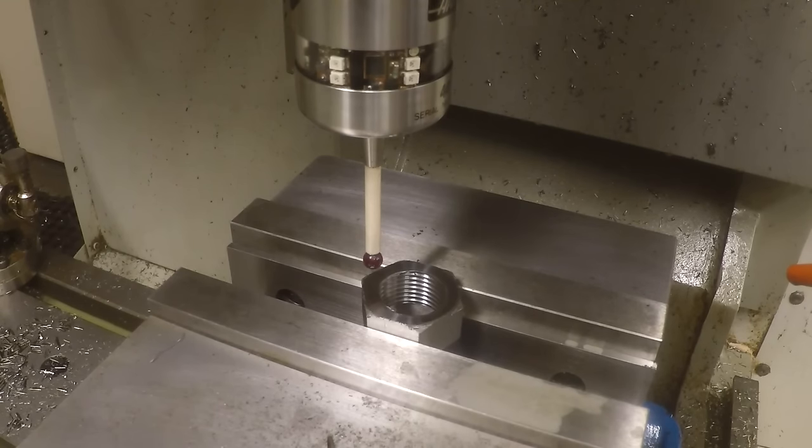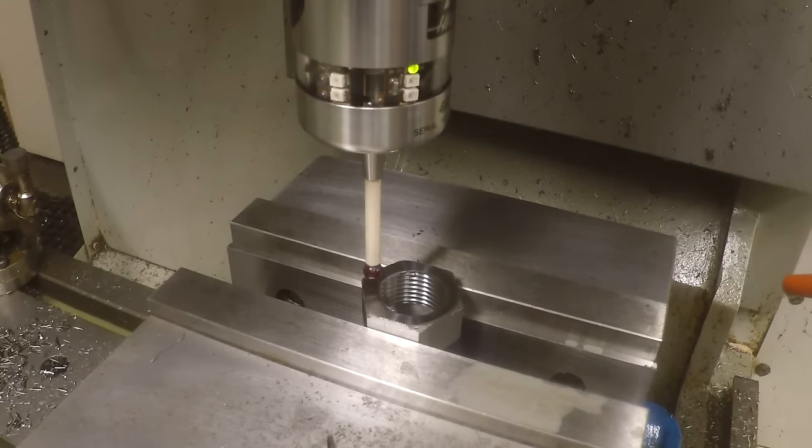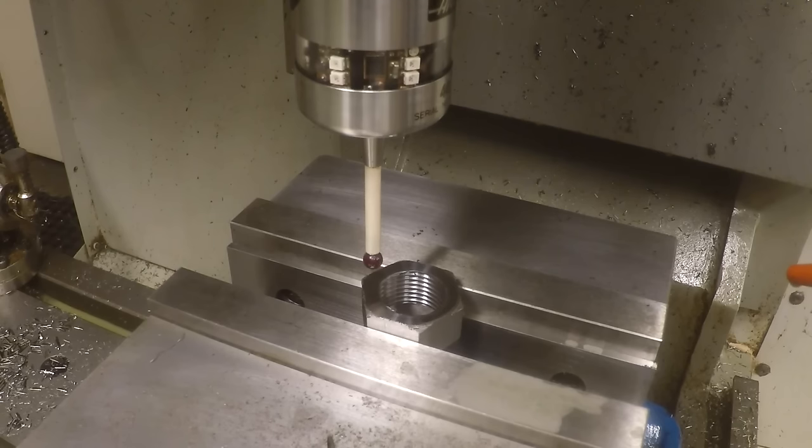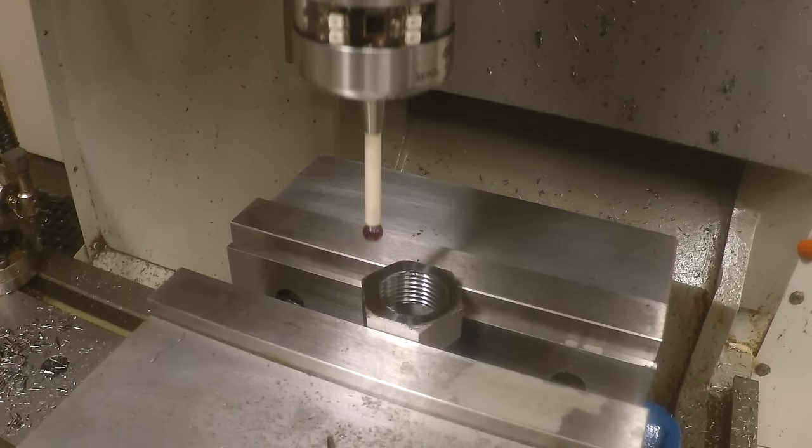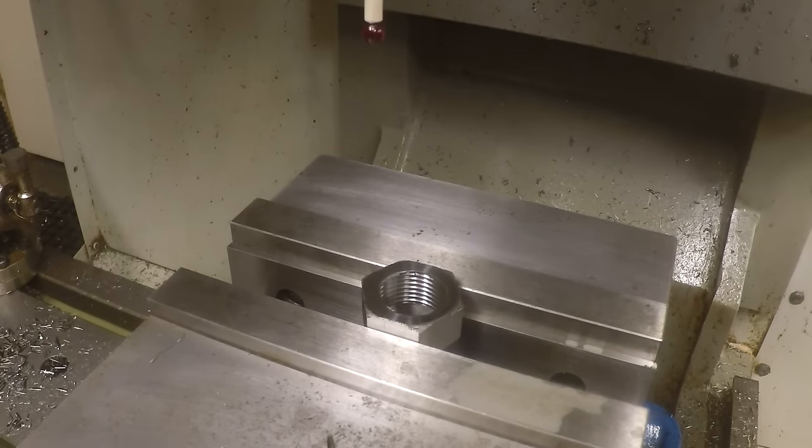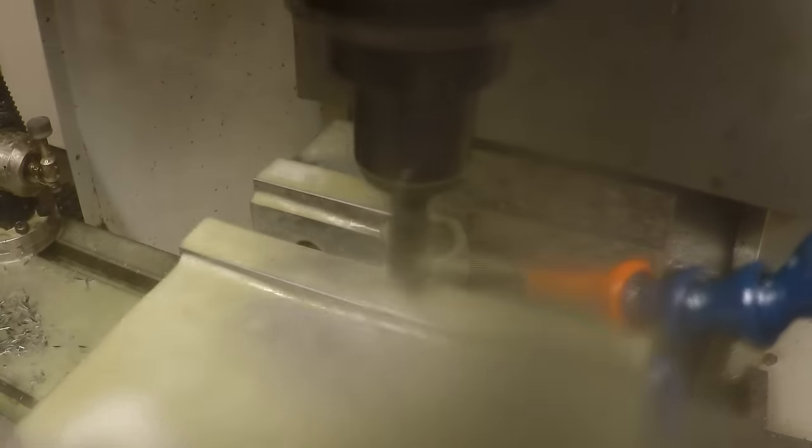And the spindle probe will get it right on the point of that hex and be precise. It'd be a little bit hard to do that with an edge finder. You could probably do it with a dial indicator swinging the points, but the probe actually does that quite nicely. So I centered it up and set the Z.